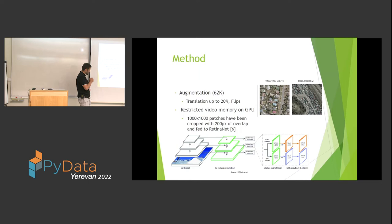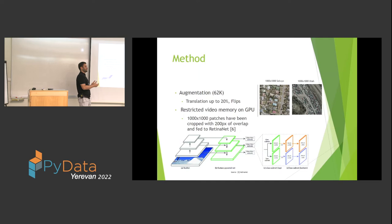We decided to use the RetinaNet architecture because it performs well at detecting small objects. As mentioned, our cars are about 20 pixels in size. After five max pooling layers, a 20-pixel object becomes just 4 pixels — making it very hard for the network to localize and detect. That's why we chose RetinaNet.